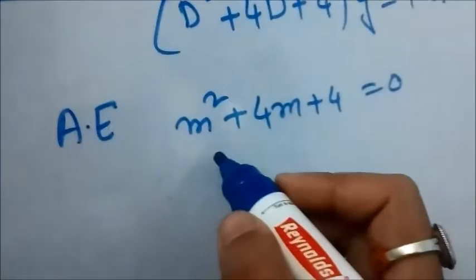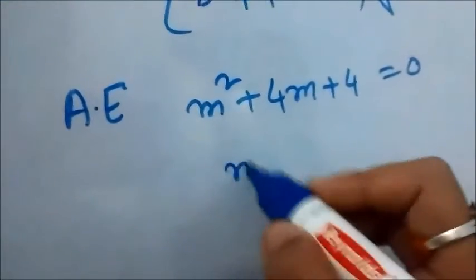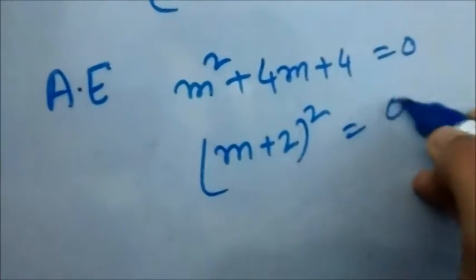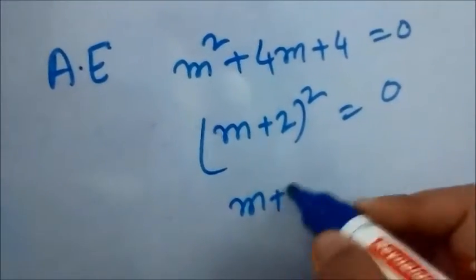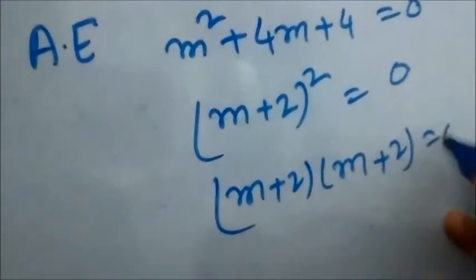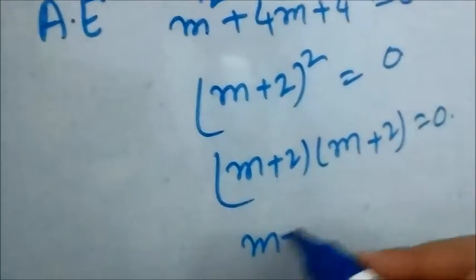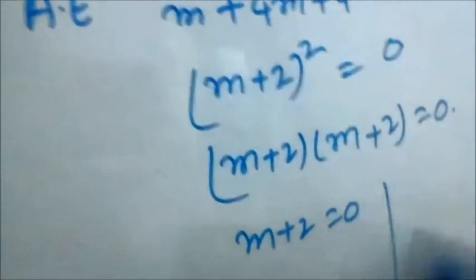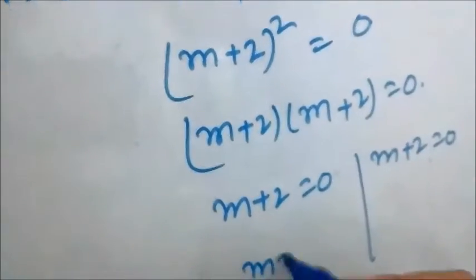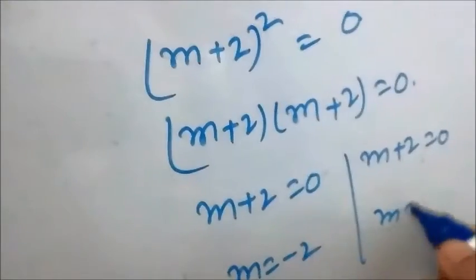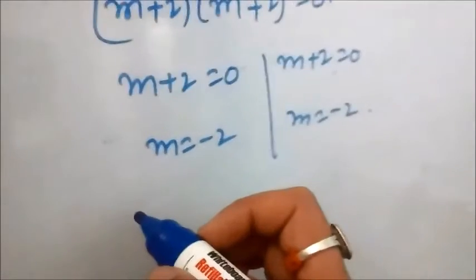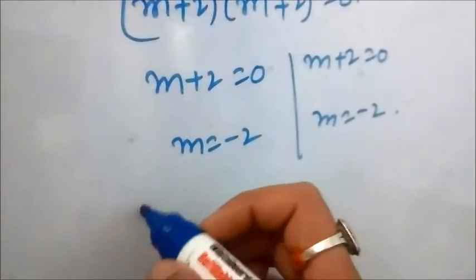This is in the form of (a + b)², so we can write this equation as (m + 2)² = 0, which gives (m + 2)(m + 2) = 0, so m + 2 = 0, meaning m = -2 and m = -2. Therefore the roots are real and repeated.